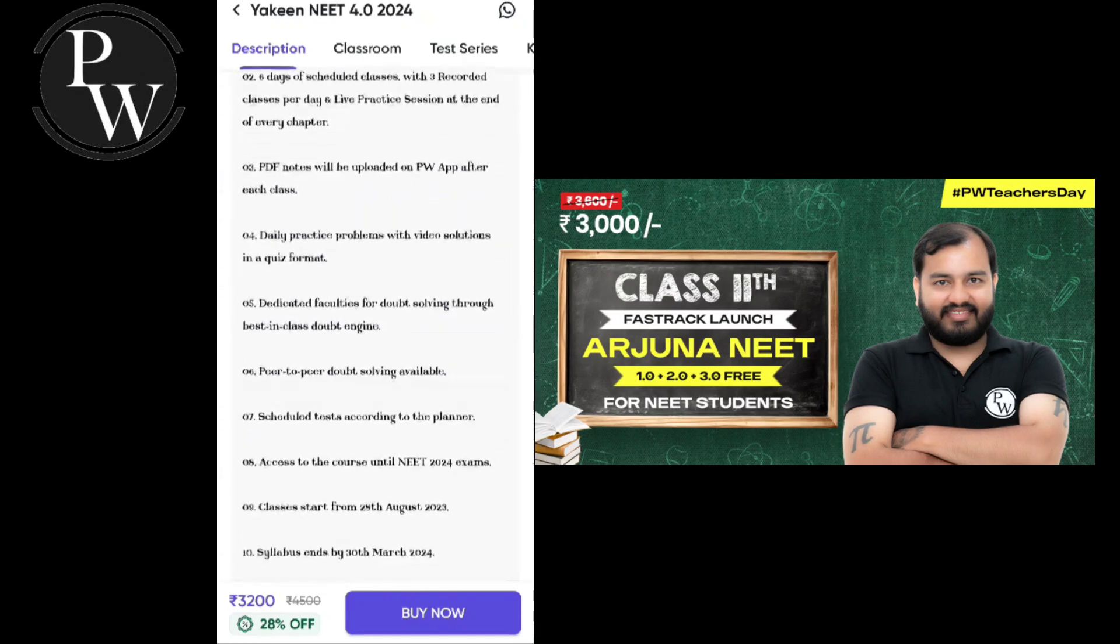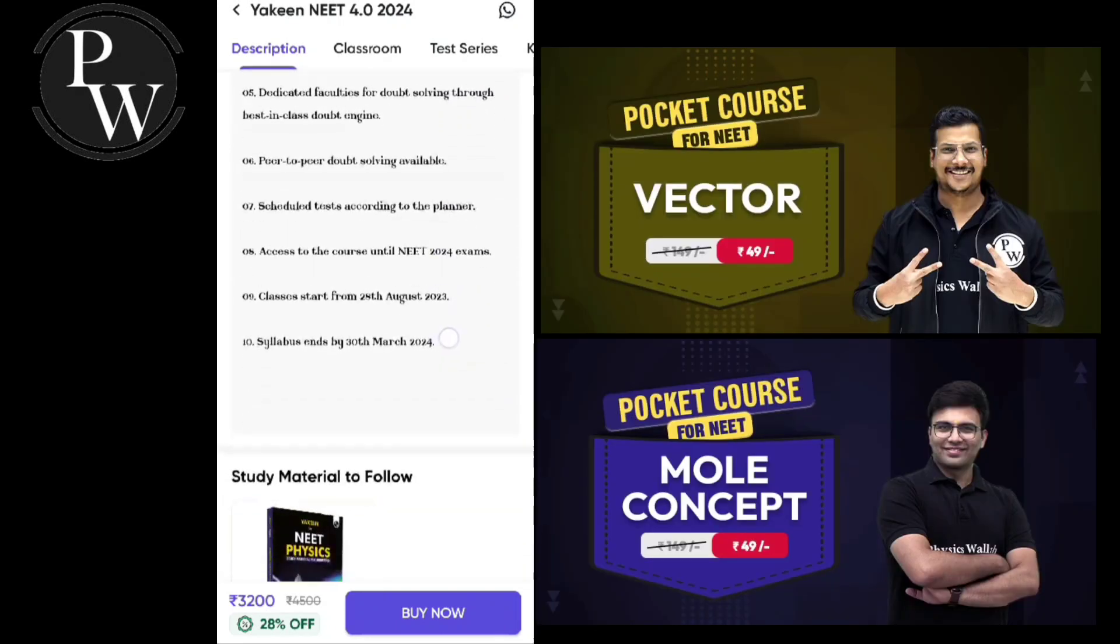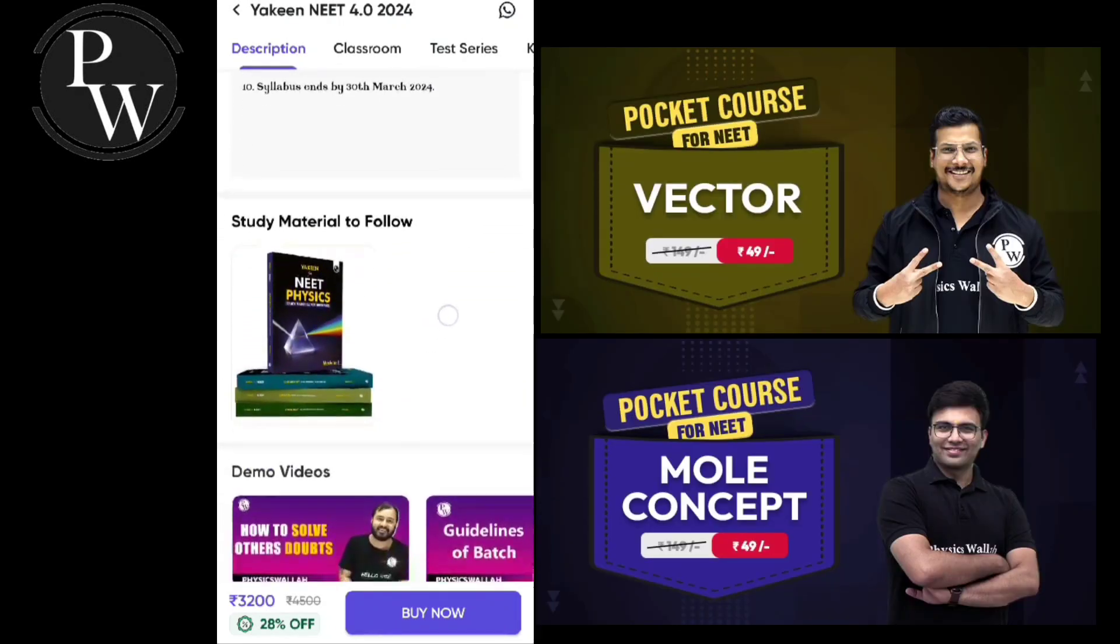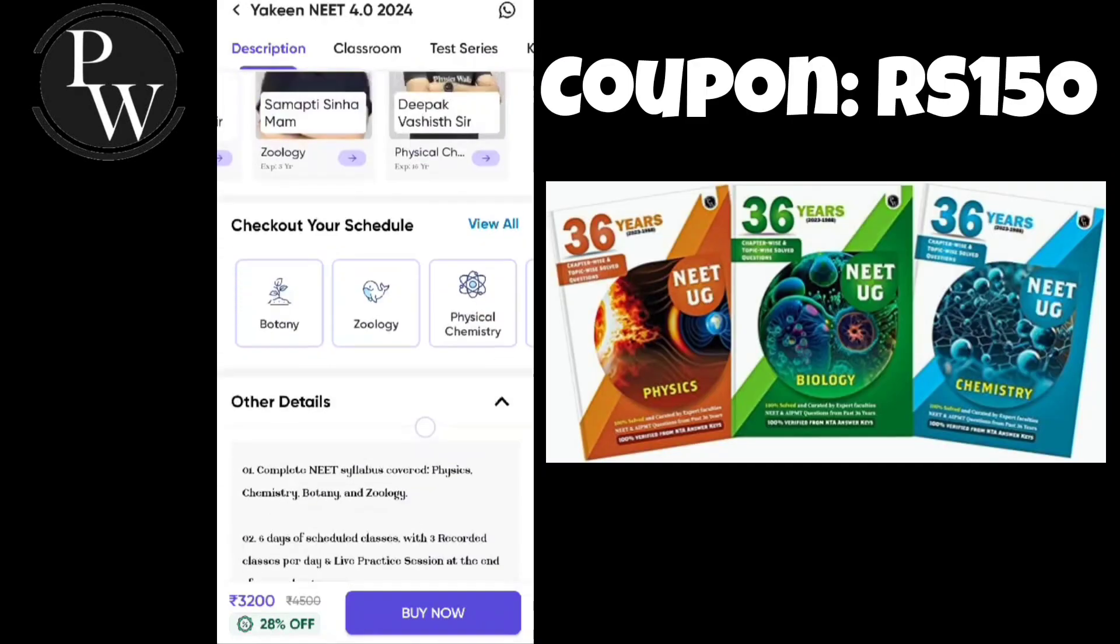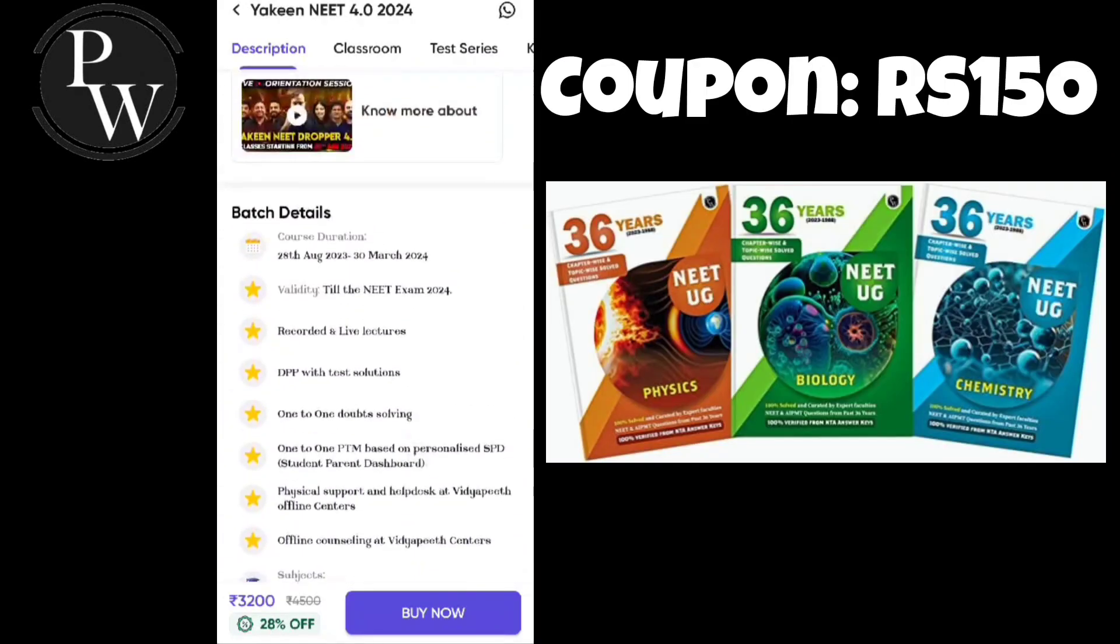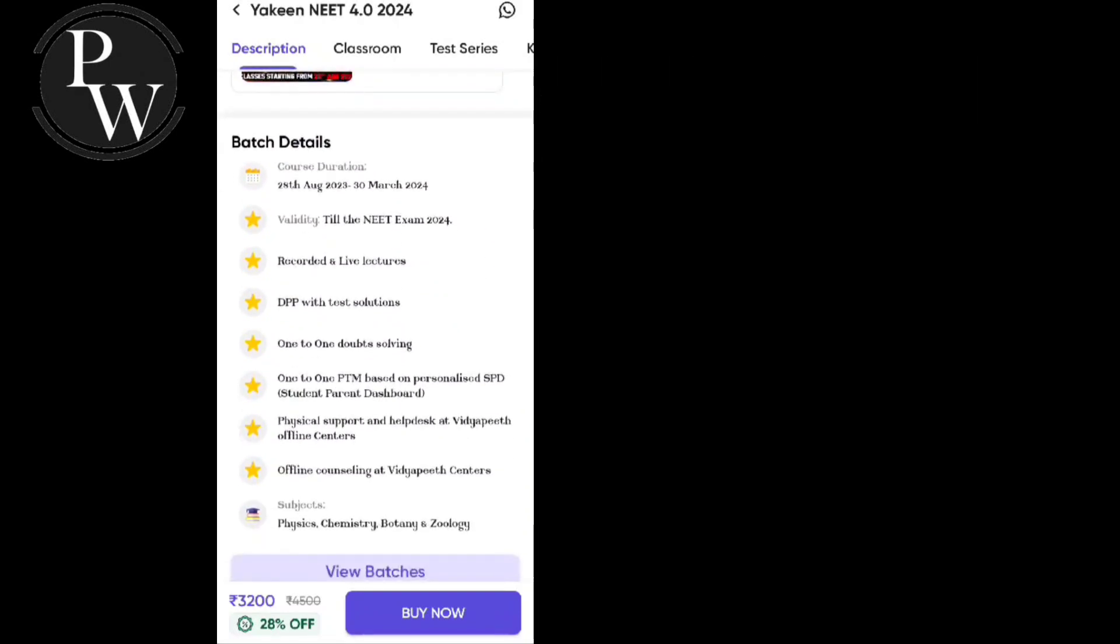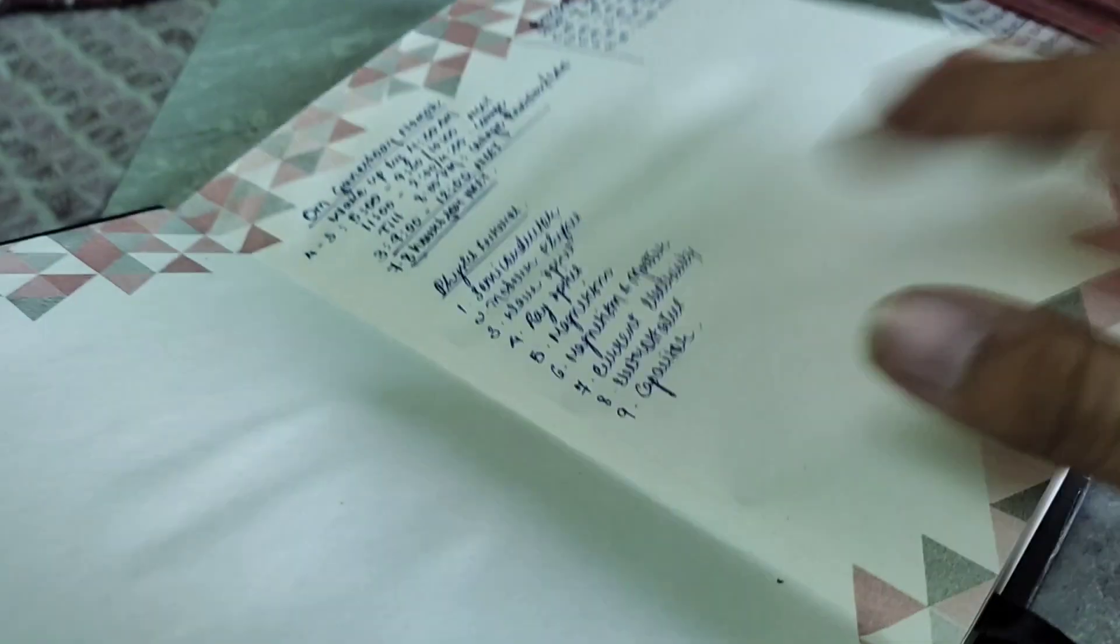Fast track for class 11 for just rupees 3000. PW has also launched its chapter-wise pocket courses starting from just rupees 49. Also check out these amazing modules and apply my coupon code for extra discount.